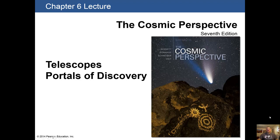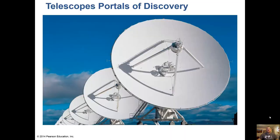Welcome back. This is the chapter six lecture on telescopes — one of my favorite lectures to give. These are some radio telescopes, probably out in New Mexico somewhere. We can listen to radio waves from space, like we saw in the last chapter about the electromagnetic spectrum, which includes radio waves along with visible light, infrared, and ultraviolet.